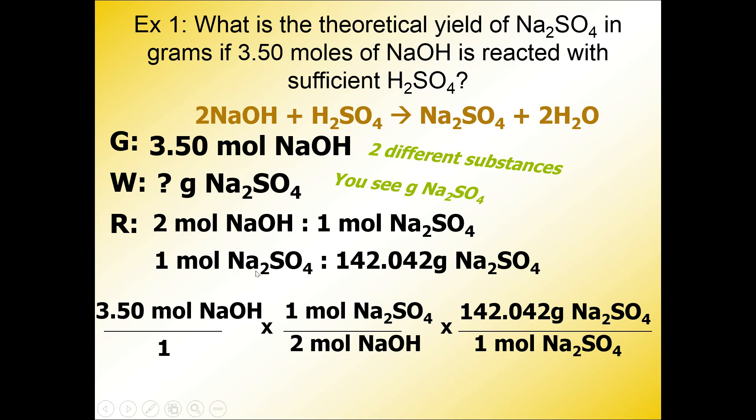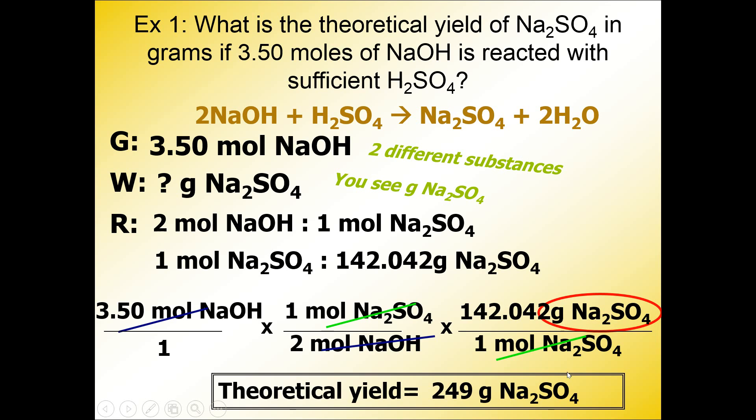When I do my calculation in the calculator, I'm going to type in 3.50 divided by 2 times 142.042. And my answer rounded to 3 sig figs is 249 grams of Na2SO4. This is the theoretical yield.